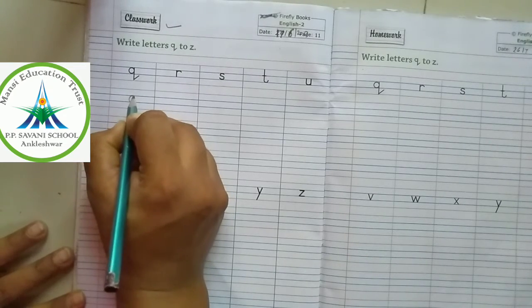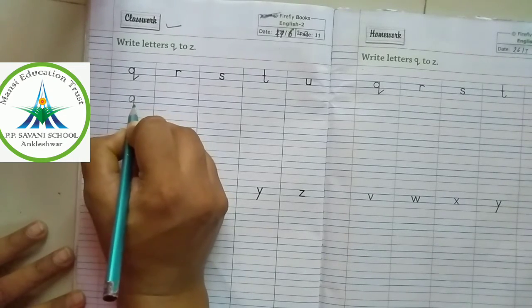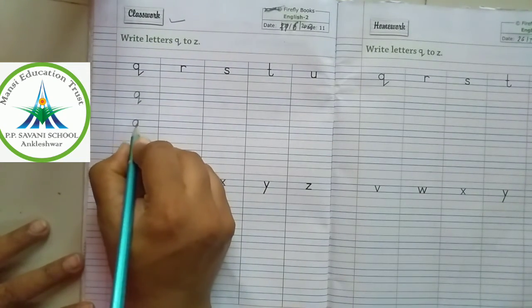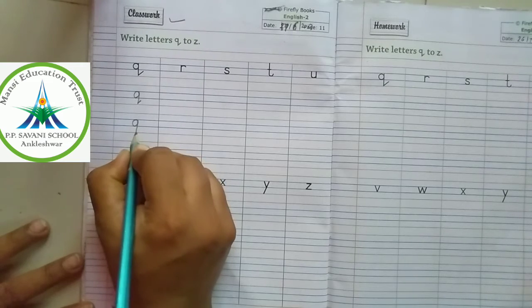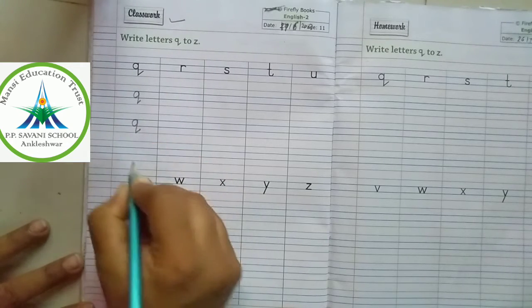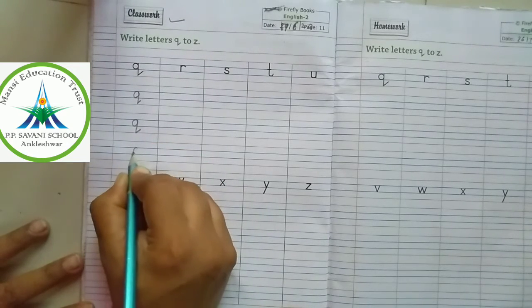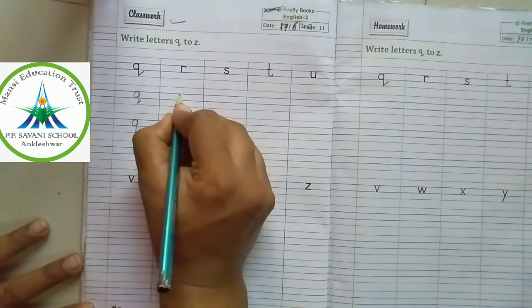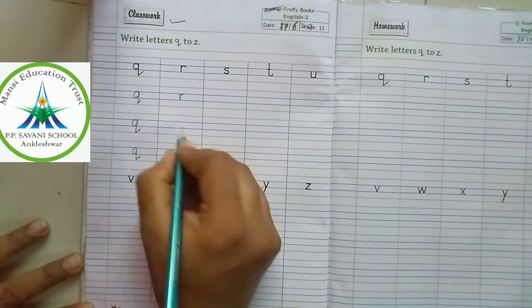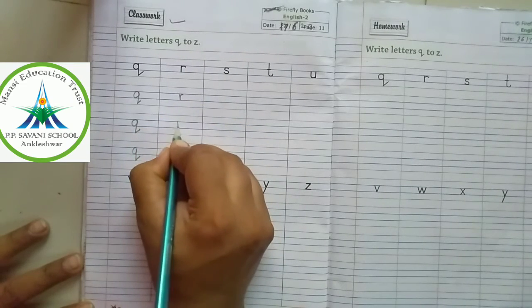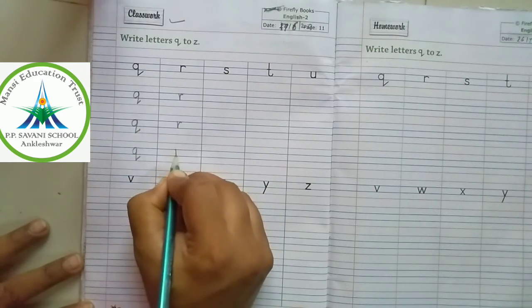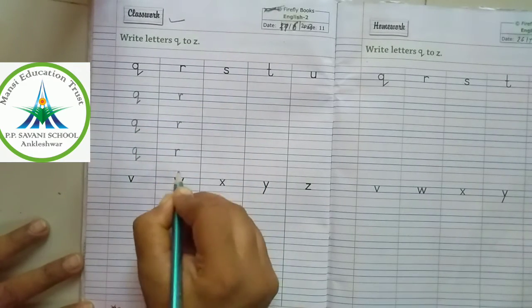Q, Q, Q. R in between two blue lines. R, R.